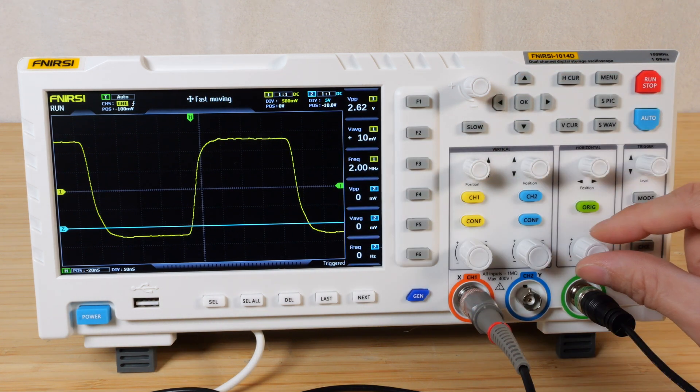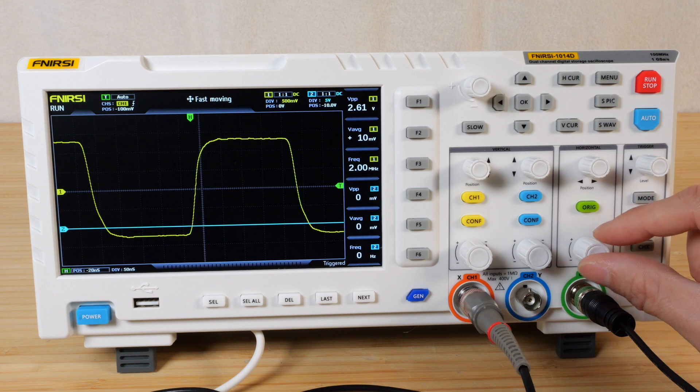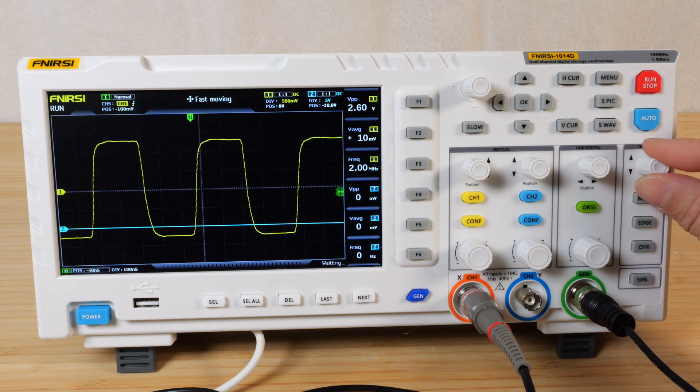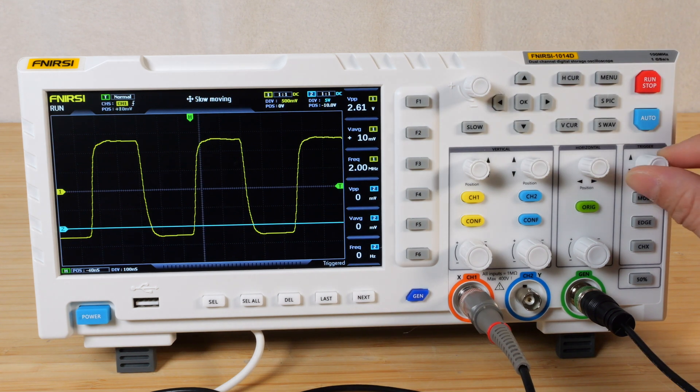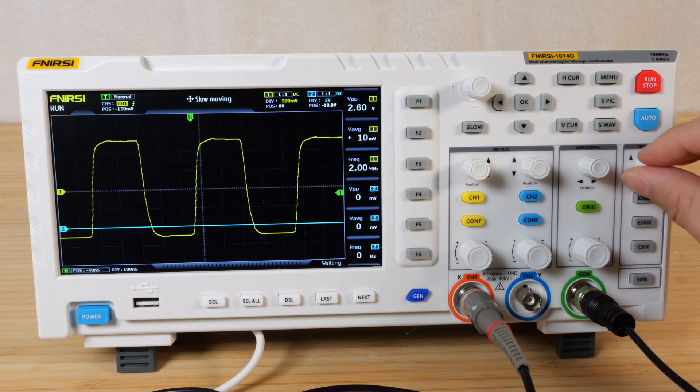It looks like it averages whatever it's showing a little bit. I can move the trigger up and down just fine. This is fast moving. If I do slow, it makes everything slower moving, so you can have more precision.